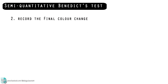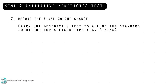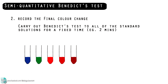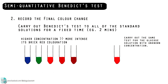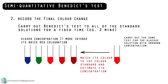If you choose the second way, carry out Benedict's test for all of the solutions for a fixed time — for example, 2 minutes. When you have done the test, you will have a series of color standards. The higher the concentration, the more intense its brick-red coloration. Carry out the test in the same manner for the unknown sample, then match its color to the color standard and estimate its concentration.